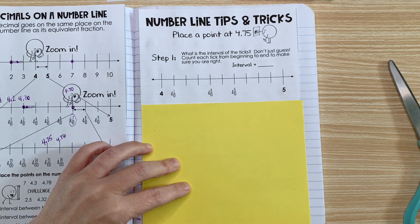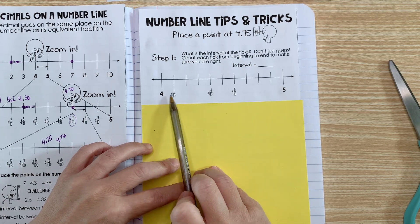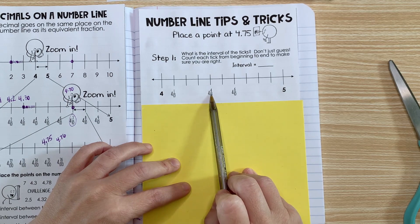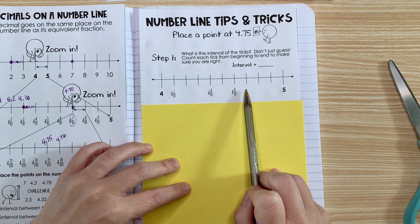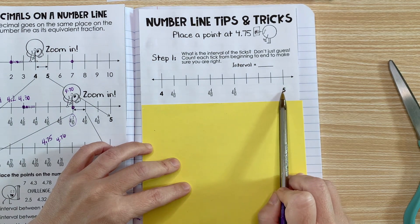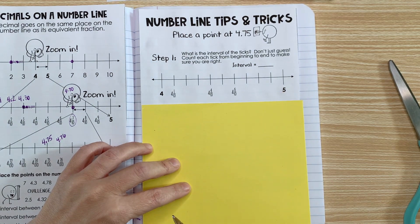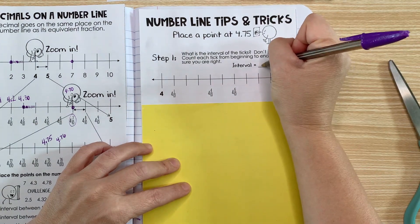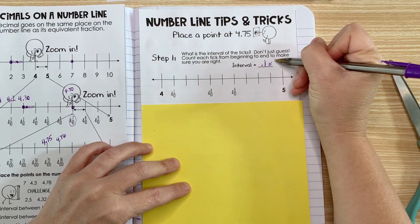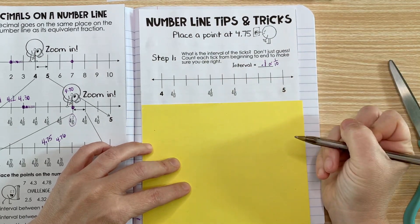It looks like we're counting by tenths, so let's test it: 4.1, 4.2, 4.3, 4.4, 4.5, 4.6, 4.7, 4.8, 4.9, 5. So our interval is counting by tenths. Our interval is one tenth, or maybe you wrote 0.1 - either way is fine.